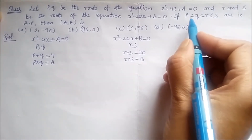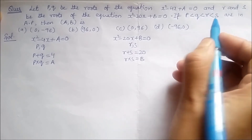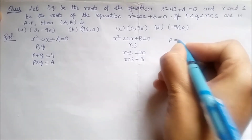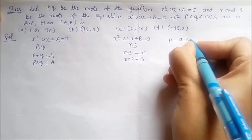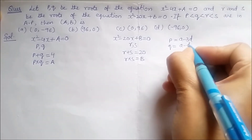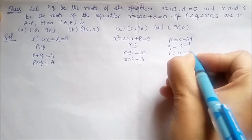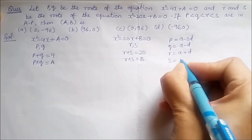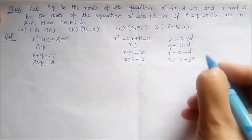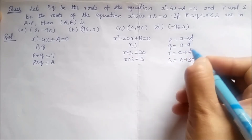Since p, q, r, s are in AP with p < q < r < s, we represent them symmetrically. Let p = A - 3d, q = A - d, r = A + d, and s = A + 3d, where A is the middle value and 2d is the common difference.